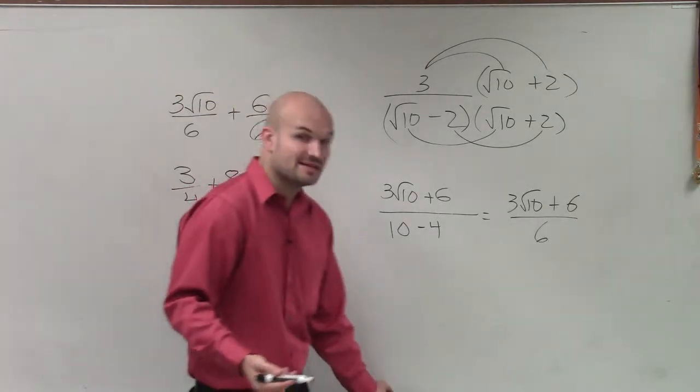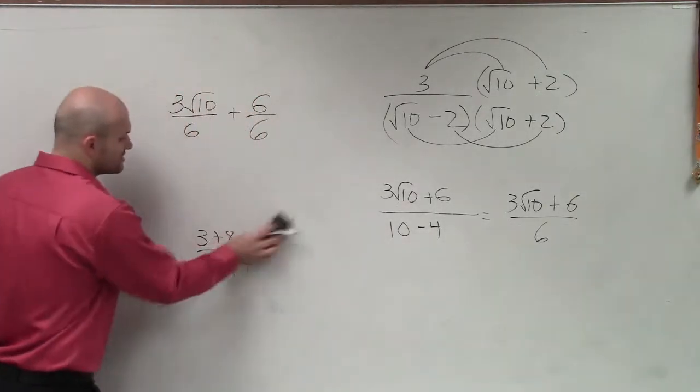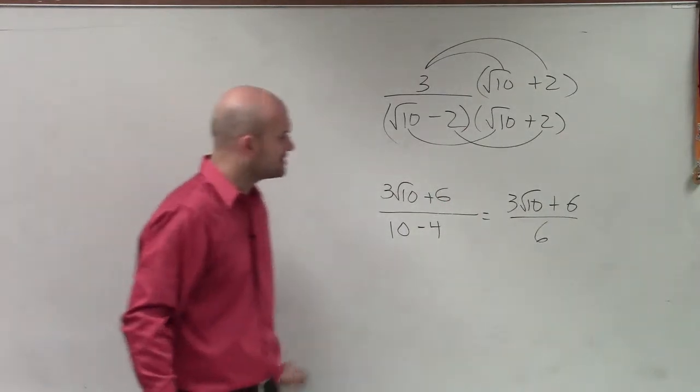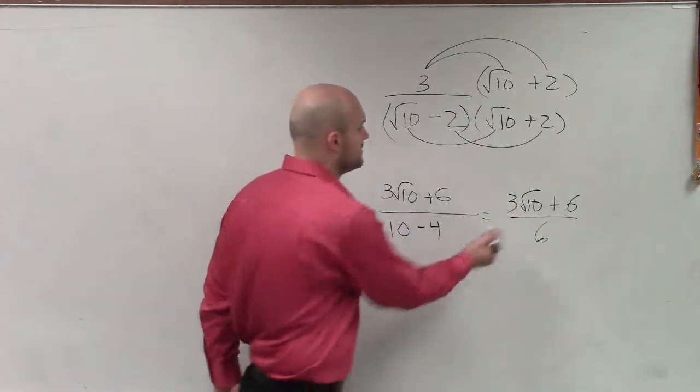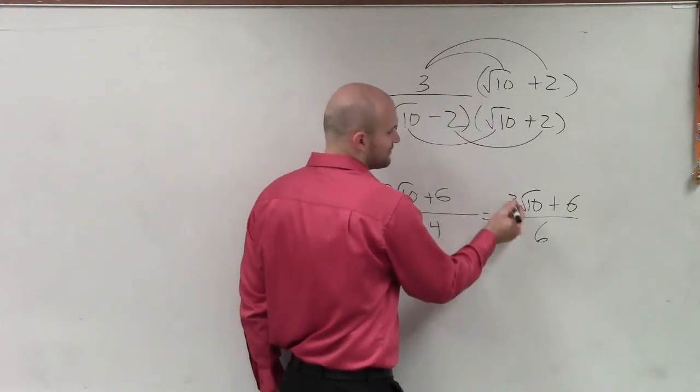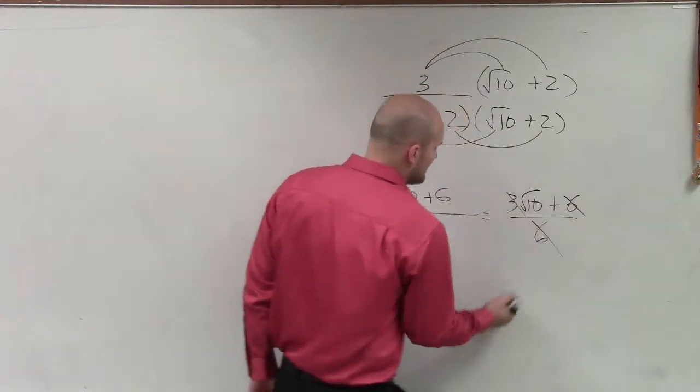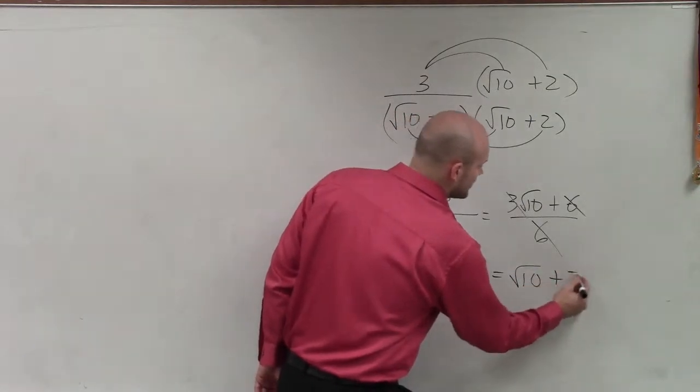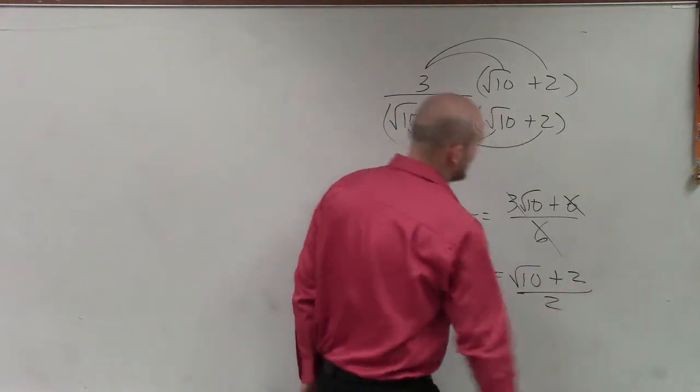So what we can do is we can still factor out a 2. You can still simplify this, but we're not going to have this simplified all the way. So the common term here is actually a 3. So if I factor out a 3, my final answer is going to be the square root of 10 plus 2 divided by 2.